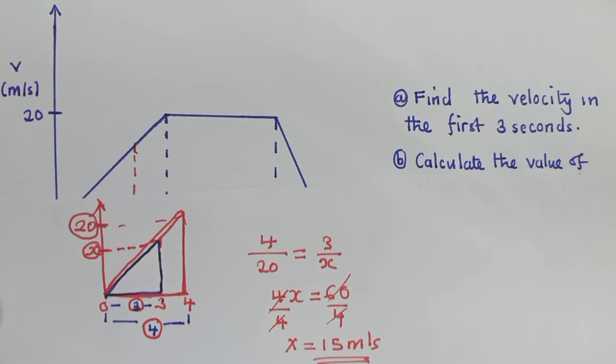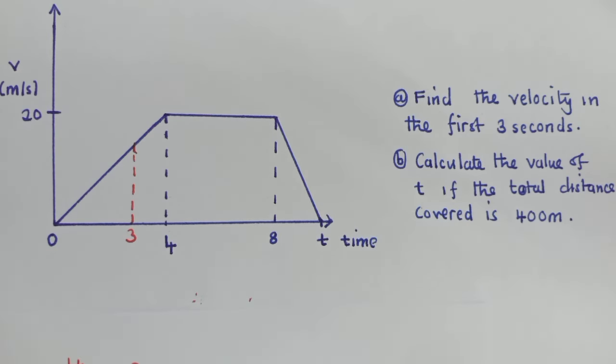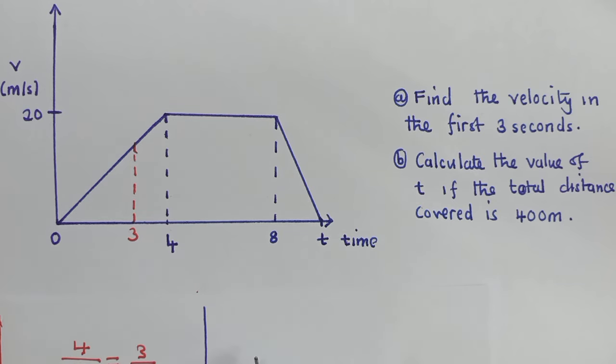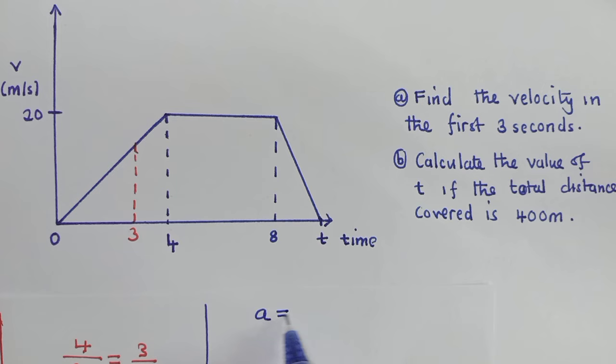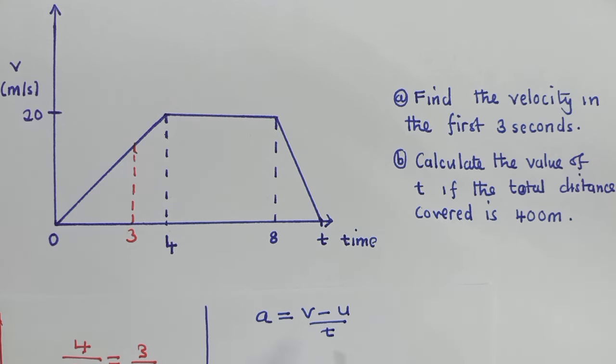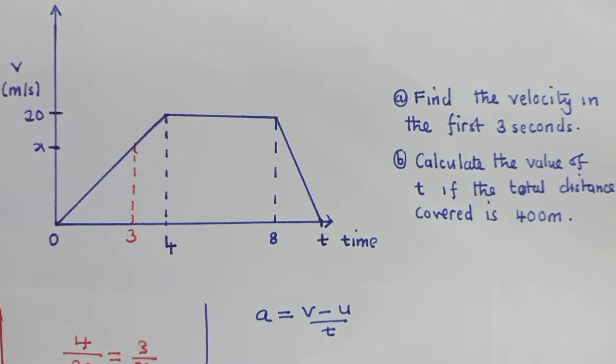Let me show you another method. This method is very simple, I think, to understand. The method I'm about to show you is for finding acceleration. So you say acceleration is equal to final velocity minus initial velocity over time. This method will work to find what we are looking for here, the value of x.